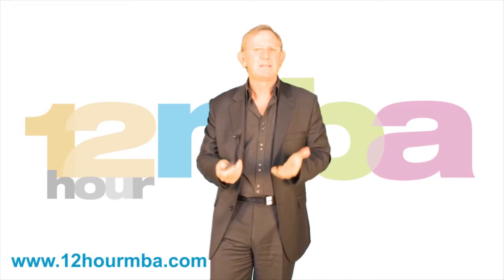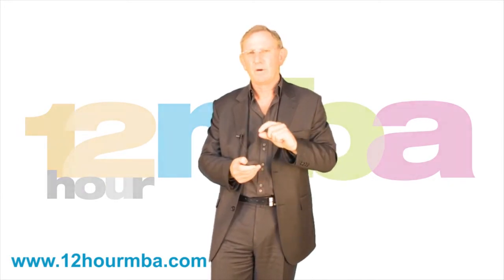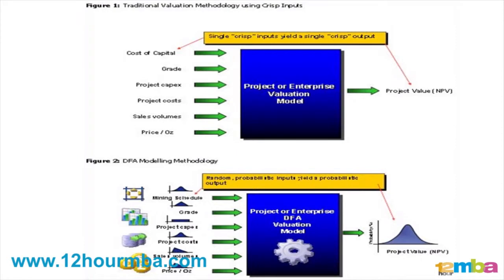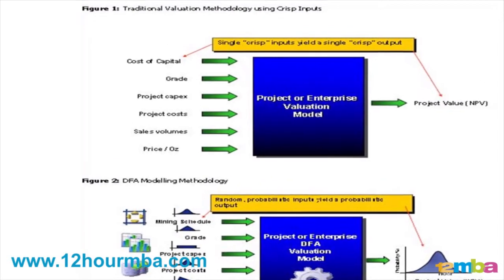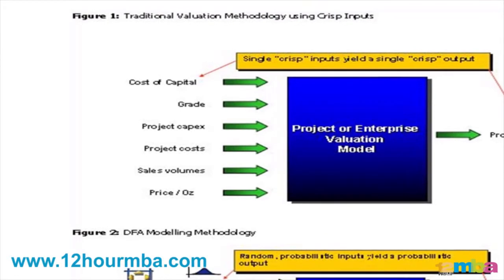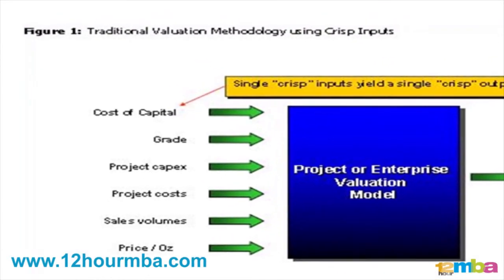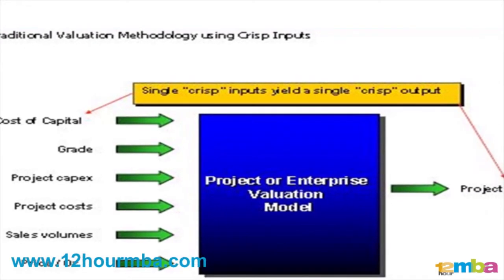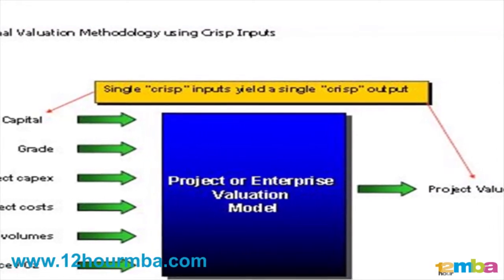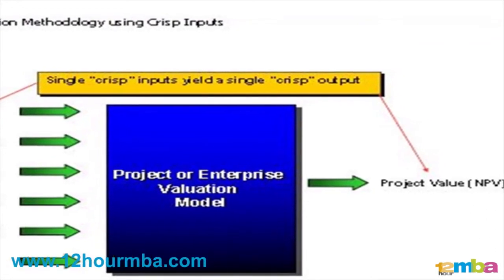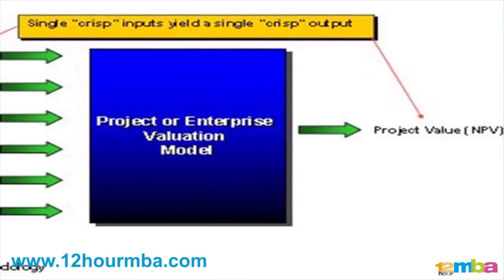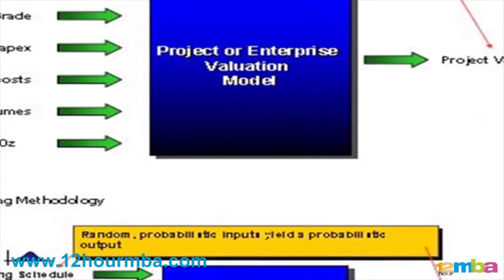But we need to get more sophisticated than that in the real world. And so we have what we term sensitivity analysis. If you have a look at the slide I now have on the screen, on the left-hand side are all the variables coming into our financial model, and the outcome is one discrete value for Net Present Value. But we know those inputs have a range of variables, so we can't assume a discrete value coming in because it's just not real world.